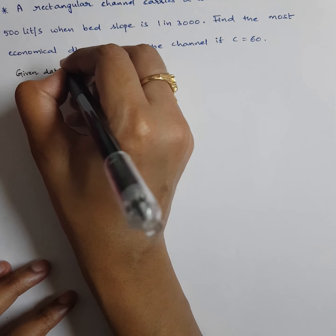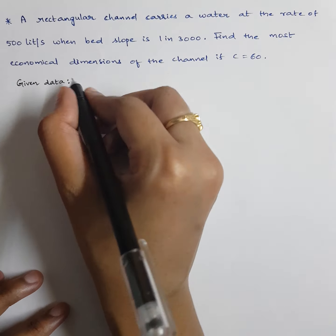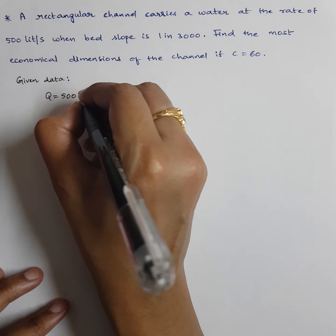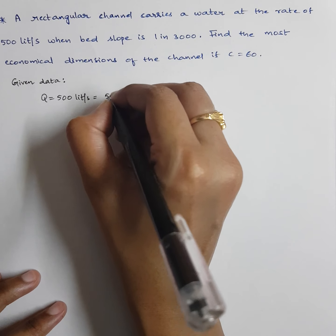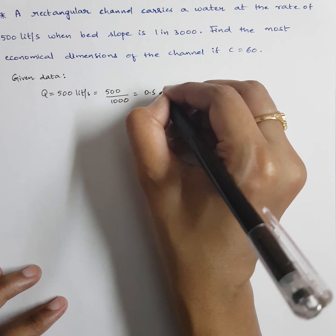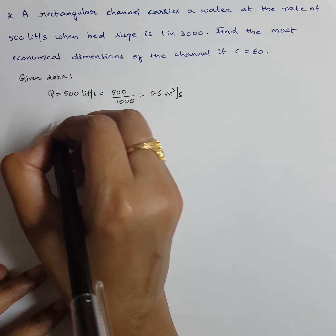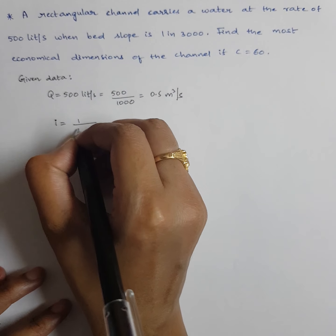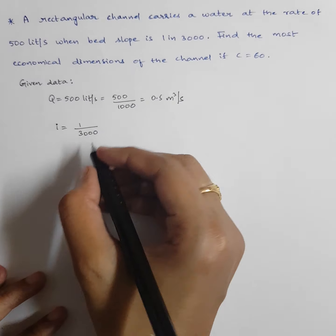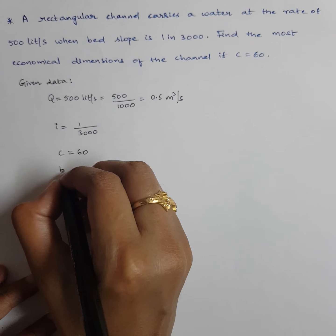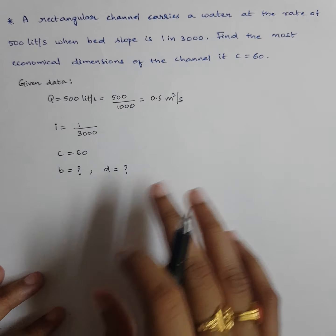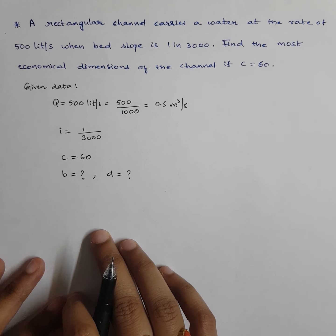For whatever model problem you must start with the given data. Q is given as 500 liters per second, converting to meter cube per second: 500 by 1000 which is 0.5 m³/s. Bed slope I is 1 by 3000. Chezy's constant C is 60. We need to calculate the values of B and D.